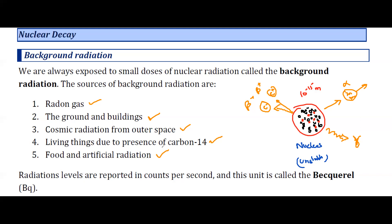Radiation levels are reported in counts per minute — how many radiations are detected every second using a Geiger-Müller (GM) tube. This unit is also known as the becquerel, denoted by Bq. For example, 50 radiations detected every second means the activity is 50 becquerel.